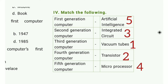Match the following. First generation computer: Vacuum tubes. Second generation computer: Transistors. Third generation computer: Integrated circuit. Fourth generation computer: Microprocessors. Fifth generation computer: Artificial Intelligence.